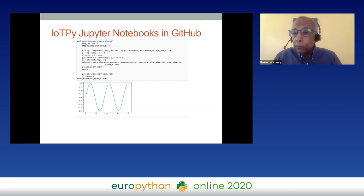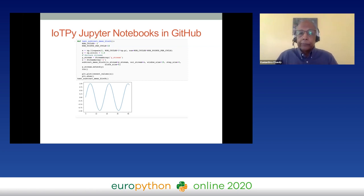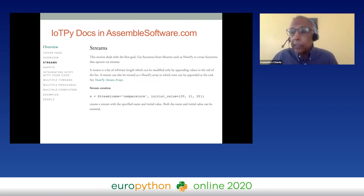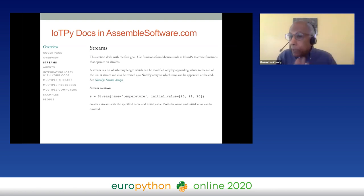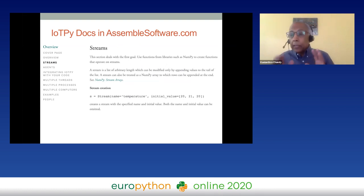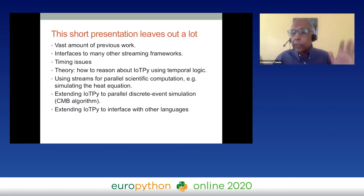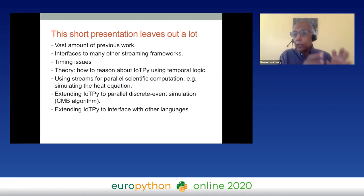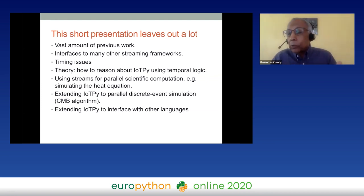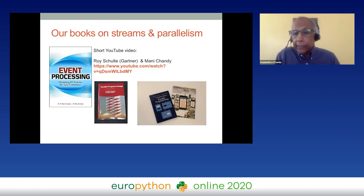IoTPy has a collection of Jupyter notebooks — that's the best way to see what IoTPy can and cannot do. We have extensive documentation at assemblesoftware.com, covering IoTPy's goals and limitations. This short presentation leaves out a lot — previous work, the immense amount of existing streaming frameworks (mostly cloud-focused), and timing issues which are critical for many applications.